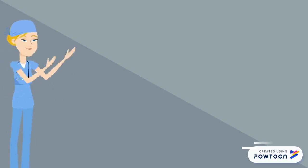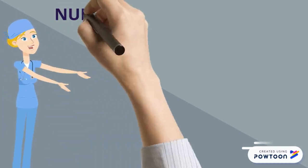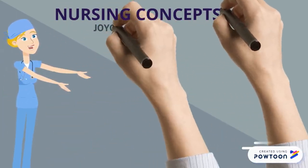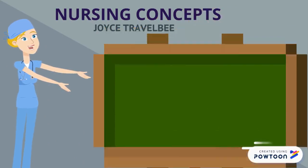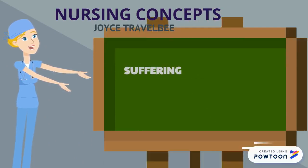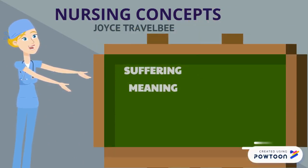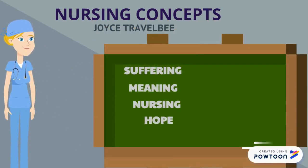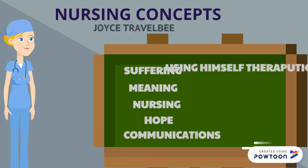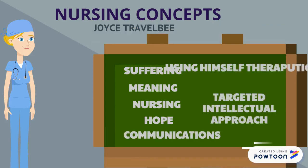The four basic nursing concepts by Joyce Travelbee: suffering, meaning in nursing, hope, communications using himself therapeutic, and targeted intellectual approach.